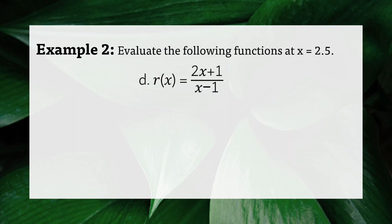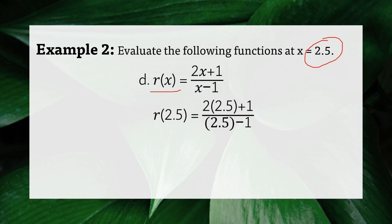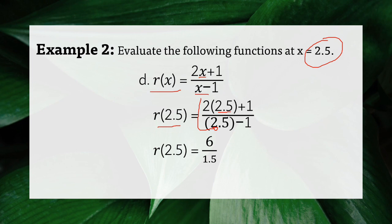For letter D, r of x equals 2x plus 1 all over x minus 1, with x equals 2.5. Substitute 2.5 into the variable x. So r of 2.5 equals 2 times 2.5 plus 1, all over 2.5 minus 1. Simplifying: 2 times 2.5 is 5, plus 1 gives 6 in the numerator. And 2.5 minus 1 is 1.5 in the denominator. Then 6 divided by 1.5 equals 4. Therefore, r of 2.5 equals 4.